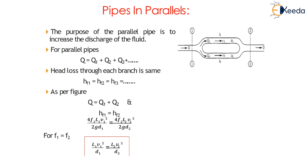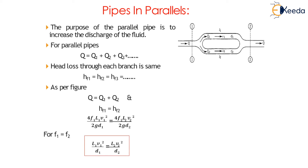Next, pipes in parallel. The purpose of parallel pipes is to increase the discharge of the fluid. For parallel pipes, Q = Q1 + Q2 + Q3 and so on. As seen in the figure, discharge Q arrives at section 1, gets distributed into two different pipes, and Q1 and Q2 recombine at section 2, giving total discharge Q = Q1 + Q2.